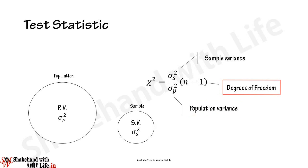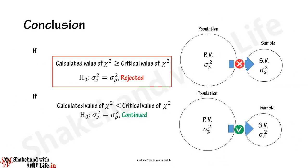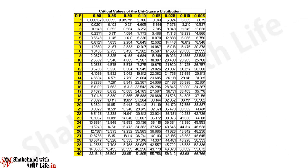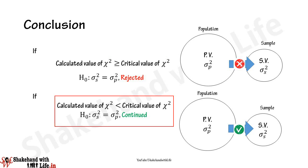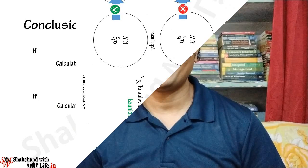The rejection and acceptance of a null hypothesis depends upon the calculated value of chi-square. If the calculated value of chi-square is equal to or greater than the critical value from the table for (n − 1) degrees of freedom at a given significance level, then reject the null hypothesis. If the calculated value is less than the critical value, we cannot reject the null hypothesis and continue with it.